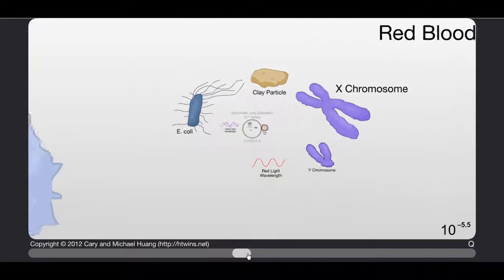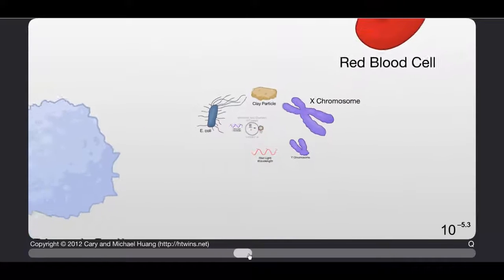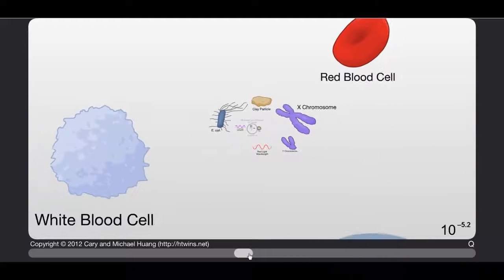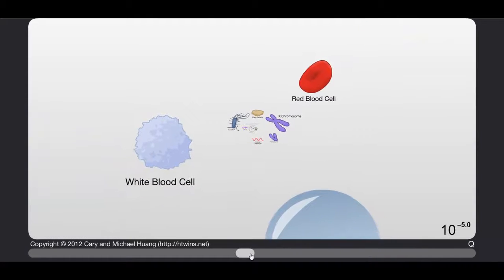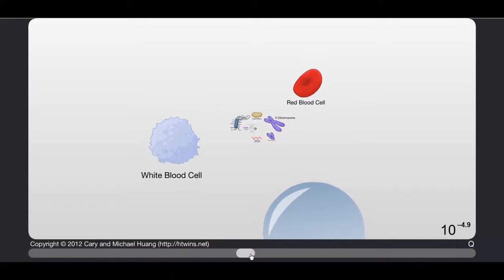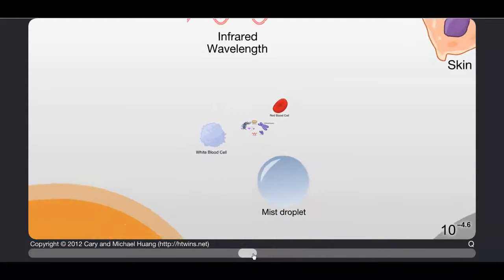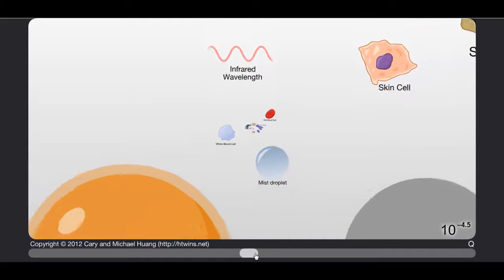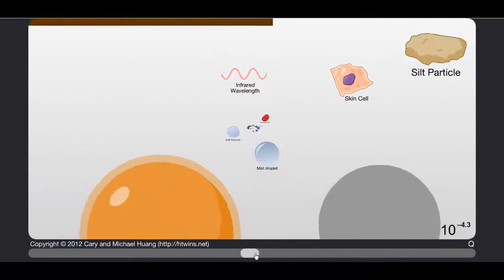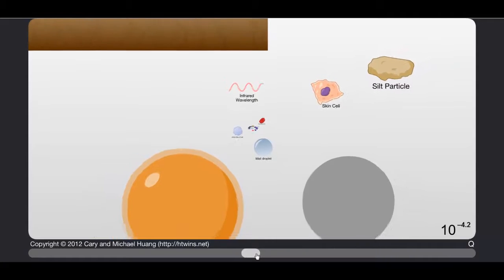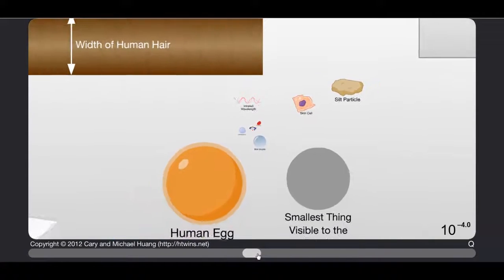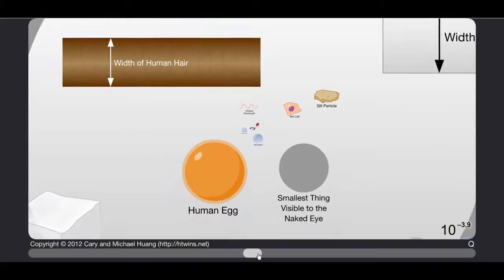Red blood cell, okay so we're getting visible stuff now. Kind of. White blood cell, oh white blood cells are all like snowflake looking. Mist droplet, I've seen mist droplets before. Skin cells. Whoa we're getting a big box here. The width of a human hair. Wow that's so awesome. Human egg, smallest thing visible to the naked eye. That is so cool.